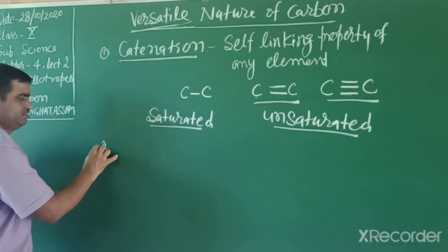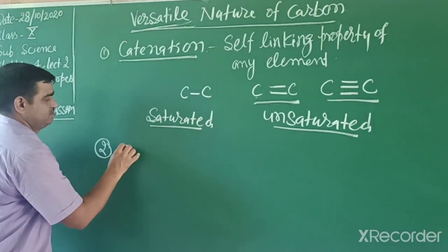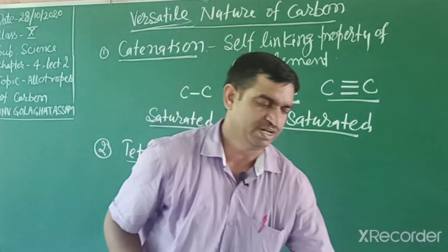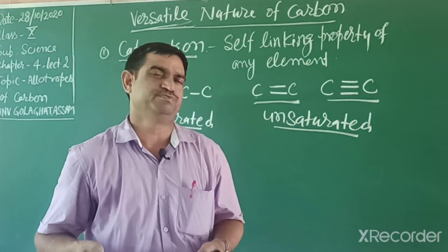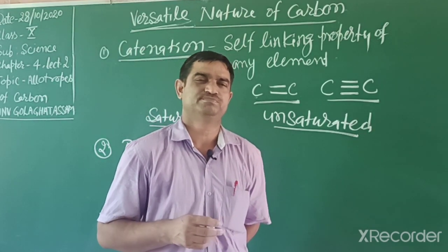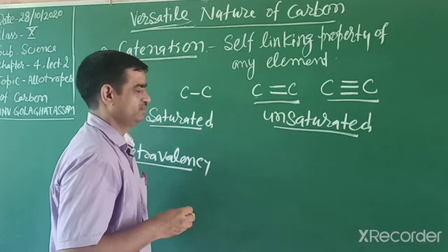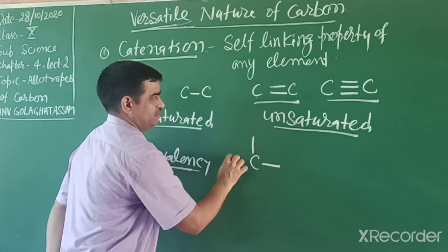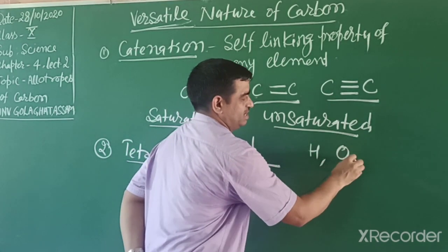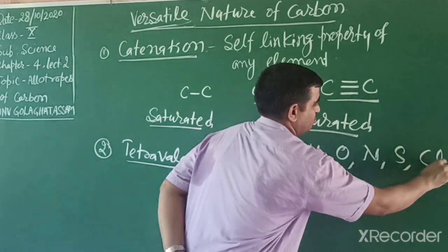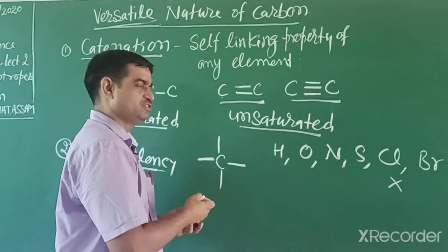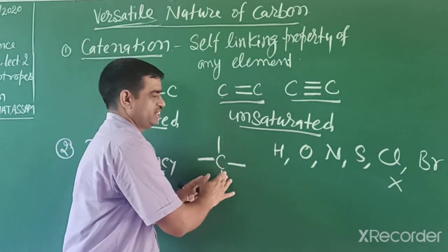The other property is tetravalency - carbon has a valency of 4, meaning one carbon has four bonds available. That valency can form bonds with other elements like oxygen, nitrogen, sulfur, chlorine, fluorine, bromine - we can say halogens. When these attach to carbon, they create special properties - different functional groups - which we will discuss later.